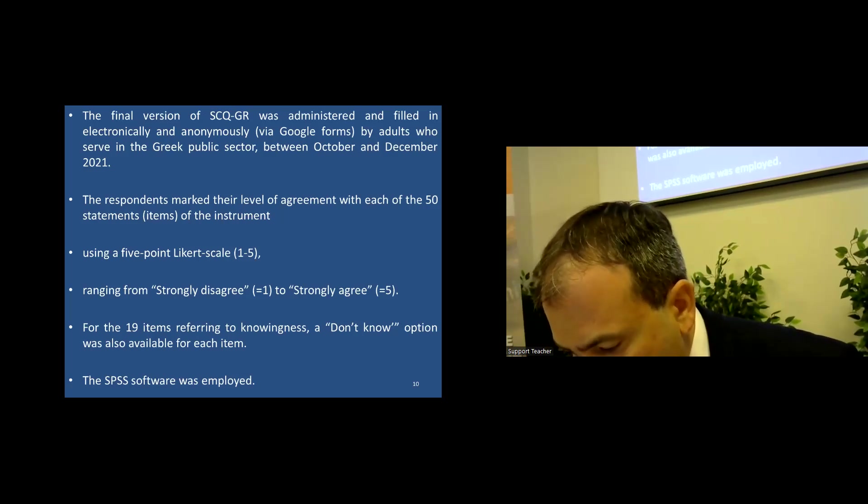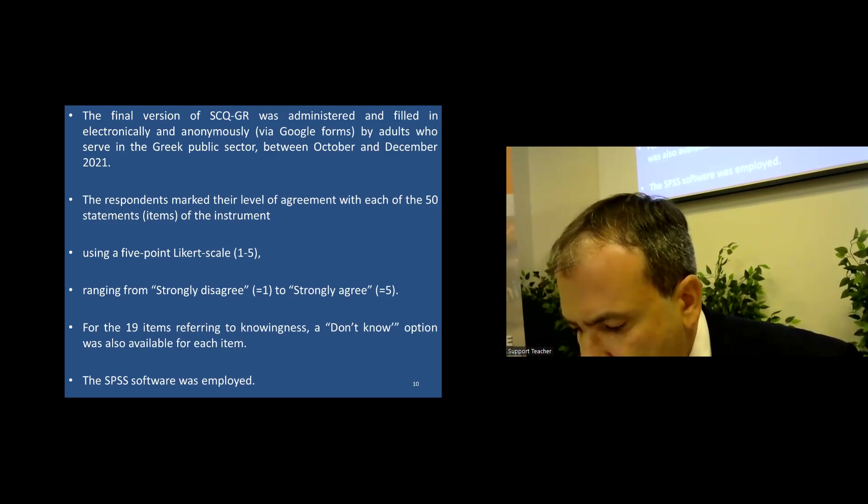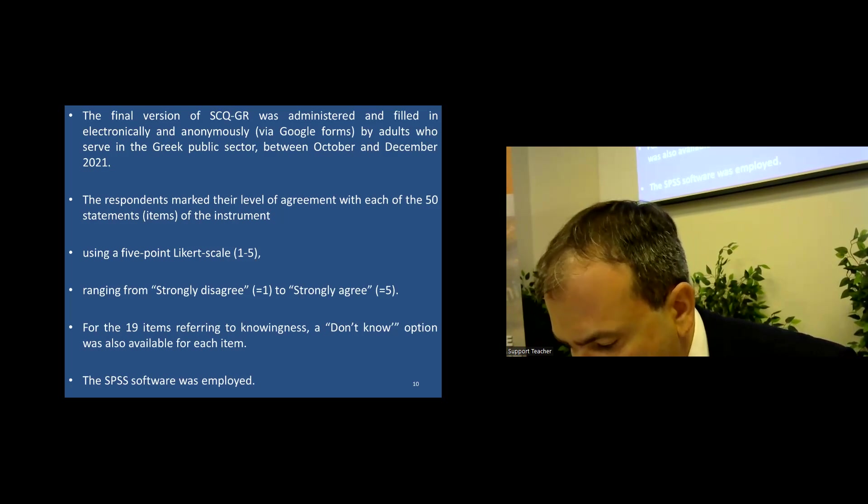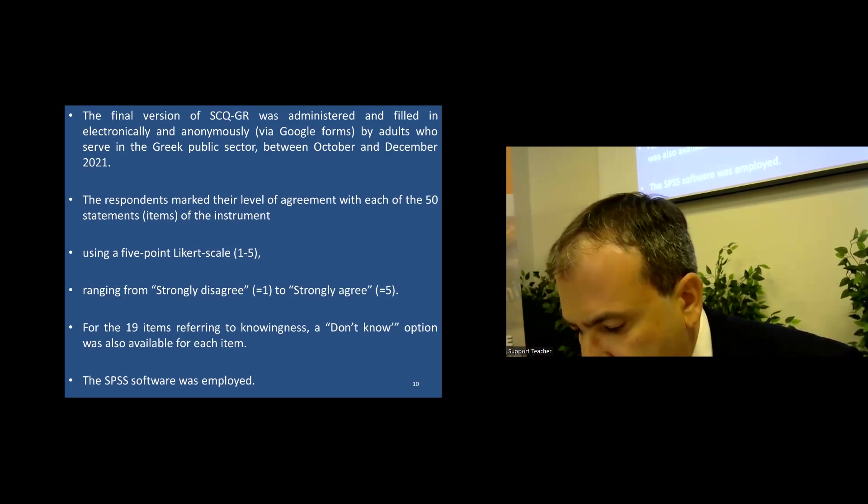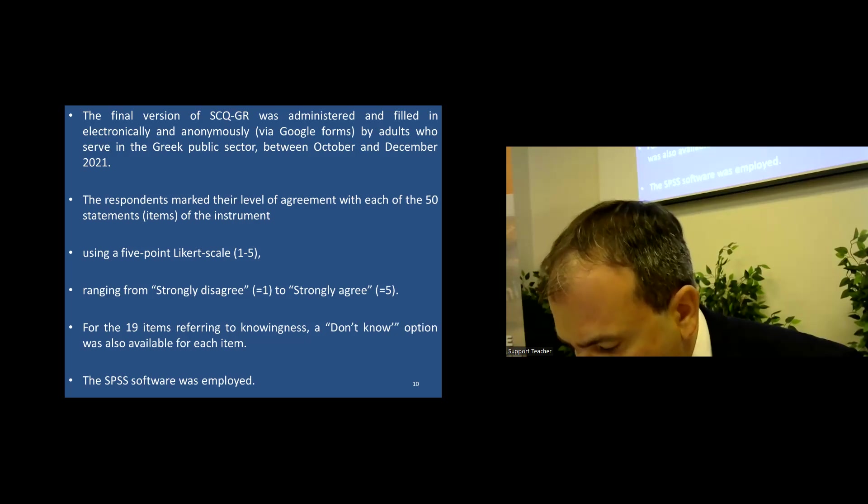The specific adult group, which are the civil servants, the Greek public servants, was chosen because it is more easily accessible for ensuring an increased response rate and in addition because it represents a large variability with respect to factors such as educational background, age, and geographic location. The respondents marked their level of agreement with each of the 50 statements items of the instrument, using a five-point Likert scale from 1 to 5, ranging from strongly disagree to strongly agree.